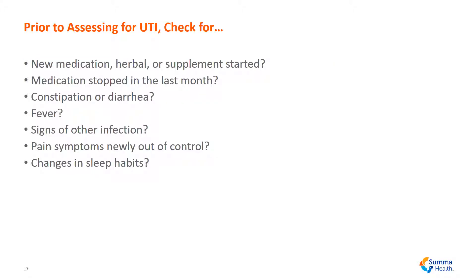Prior to assessing for a urinary tract infection, check for a new medication or herbal supplement — has one been started, or has a medication been stopped in the last month? Is the patient constipated or have diarrhea? Does the patient have a fever? Are there signs of any other infections? Does the patient have pain symptoms newly out of control? Do they have any changes in sleep habits?